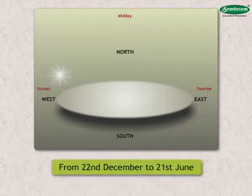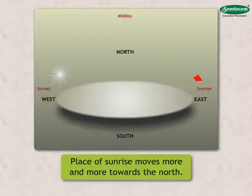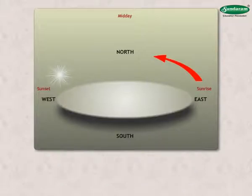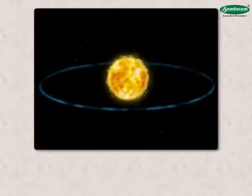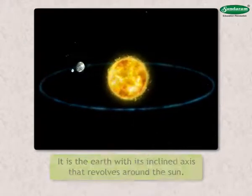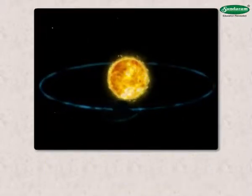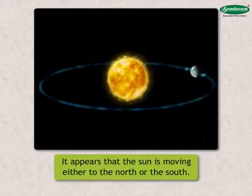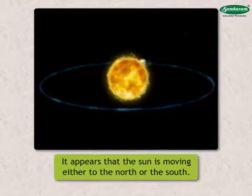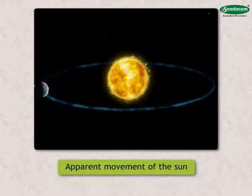From 22nd December to 21st June, the place of sunrise moves more and more towards the north. So this period is called Uttarayana, or the Northward Journey of the Sun. In fact, the sun remains in the same place and it is the earth with its inclined axis that revolves around the sun. That is why, looking from the earth, it appears that the sun is moving either to the north or the south. Hence, such a movement of the sun is called the apparent movement of the sun.